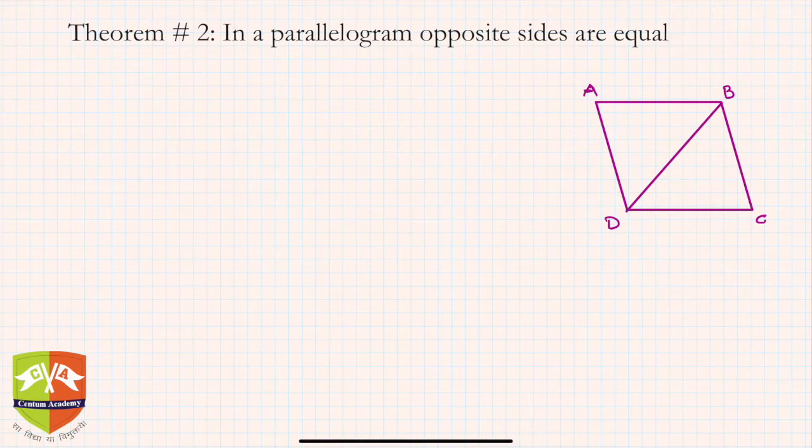Now let's deal with theorem number two. In the previous theorem we saw that a diagonal divides a parallelogram into two congruent triangles. Now we are going to use that property to prove that in a parallelogram opposite sides are equal.